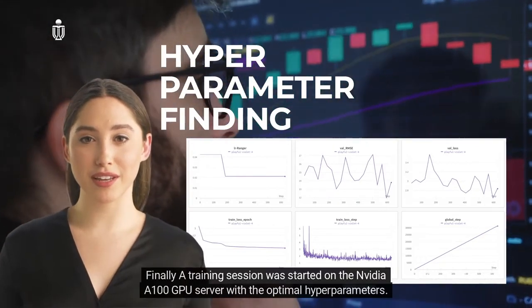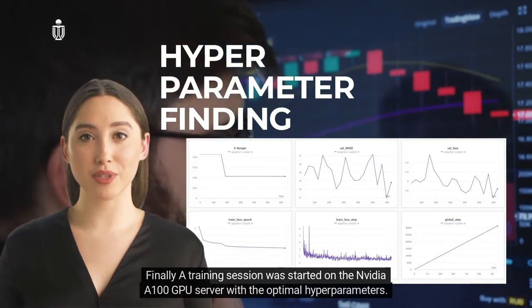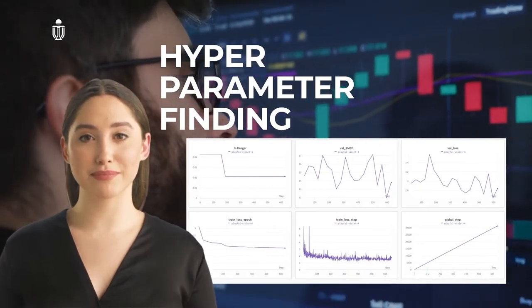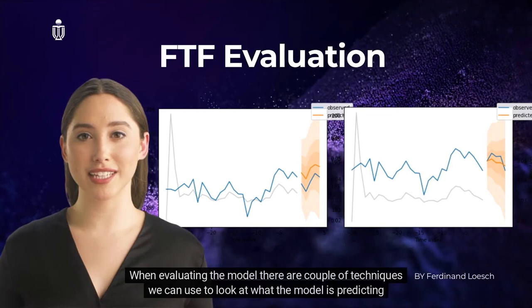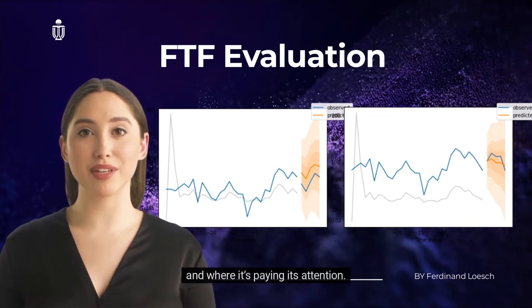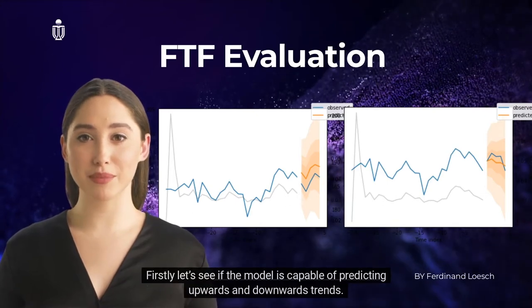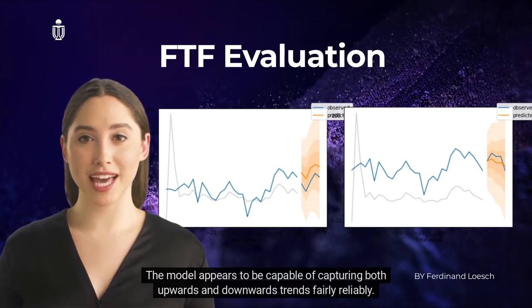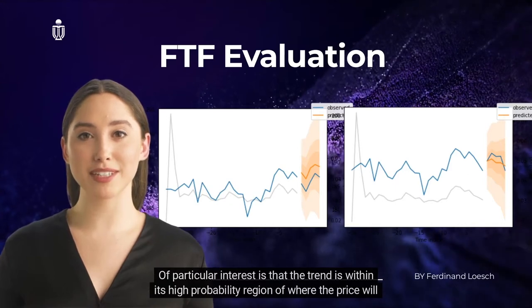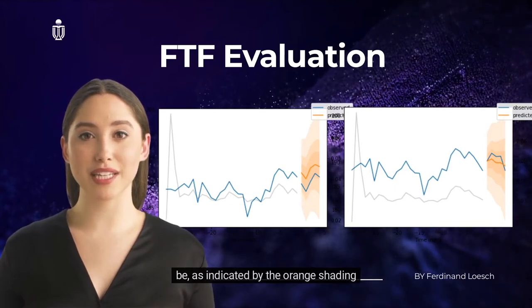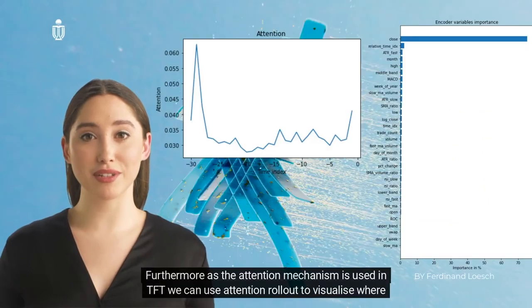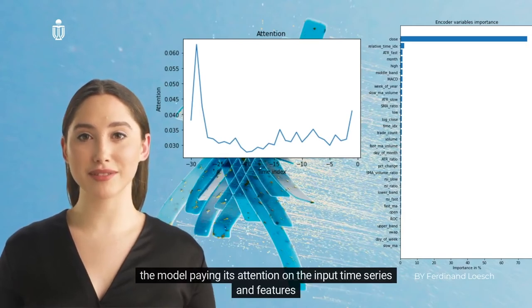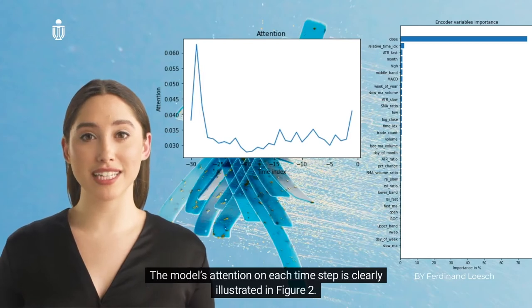A training session was started on the NVIDIA A100 GPU server with the optimal hyperparameters, using a batch size of 128, and the training run took approximately 15 hours to complete. When evaluating the model, we can examine what the model is predicting and where it is paying attention. The model appears capable of capturing both upward and downward trends fairly reliably, with the actual price trend falling within its high probability region as indicated by the orange shading. The attention mechanism in TFT allows us to use attention rollout to visualize where the model is paying attention.